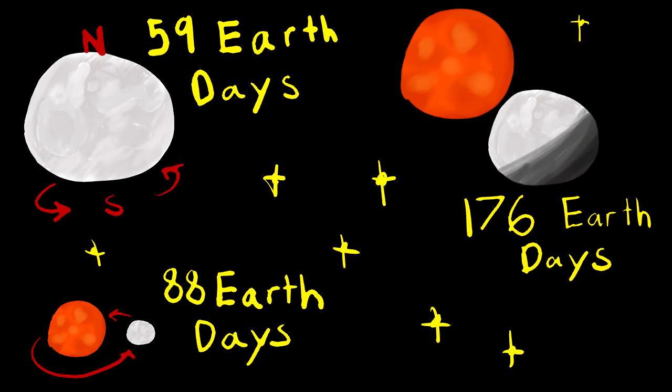Time on Mercury is also rather wild. It takes 59 Earth days to complete one rotation around its axis or to have a day. It takes 88 Earth days for a whole year. And it takes 176 Earth days to complete one day-night cycle. This means that it takes 2 years on Mercury to complete one day-night cycle.